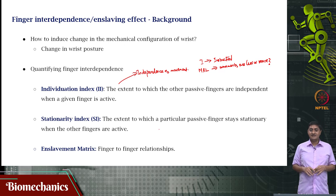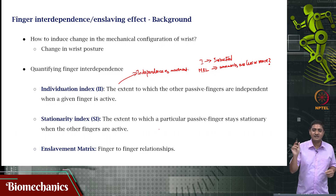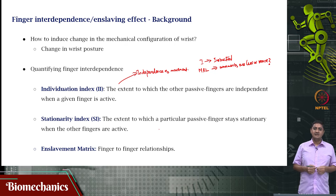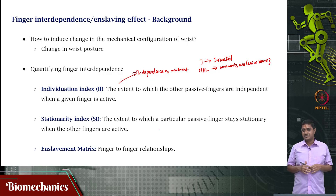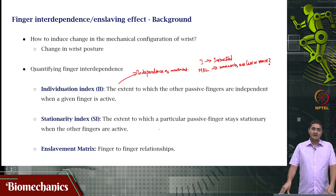The enslavement matrix, on the other hand, is a finger-to-finger interconnection or interdependence matrix. How much is the index finger affecting the middle, ring, and little fingers? How much is the ring finger affecting index, middle, and little? This is the enslavement matrix — it is more of a micro measure, because you get a finger-to-finger relationship. The individuation and stationarity indices give a measurement with reference to a single finger. These are the three measures of finger interdependence or enslavement in the kinematic space.